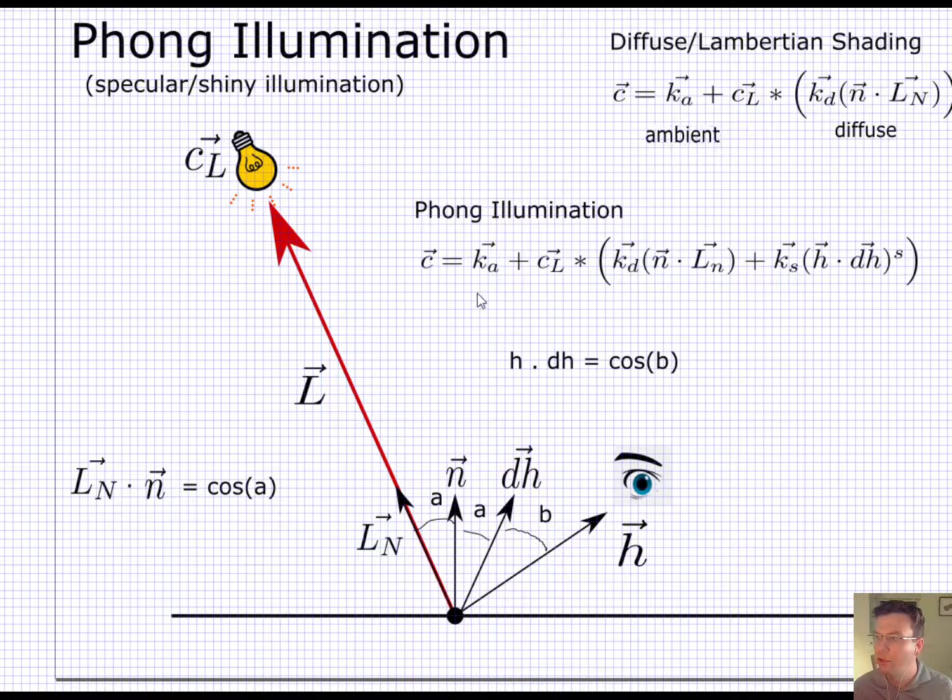So Phong illumination. We have our ambient term, we have our diffuse term, and now we also have our specular term. And so the specular term has its own coefficient, which says how much of the light am I going to reflect as a mirror. I could have a mirror that just is a red mirror - it only reflects red light.